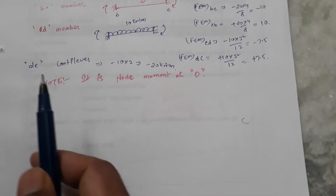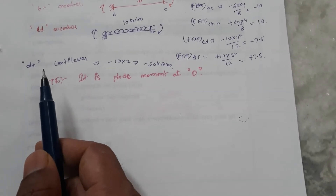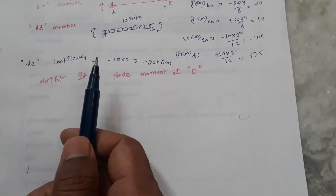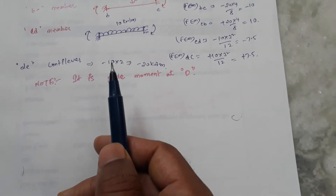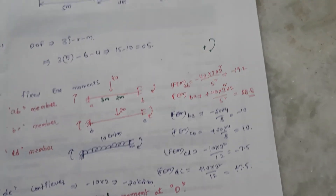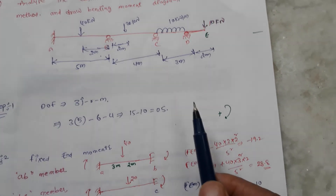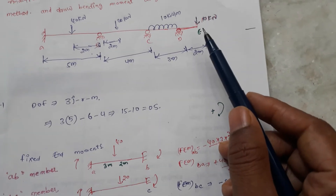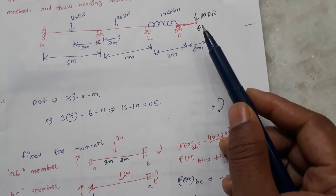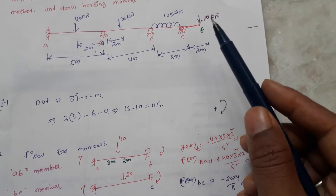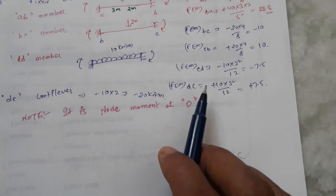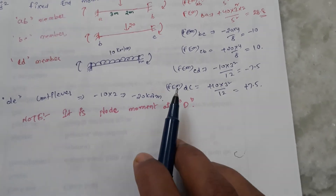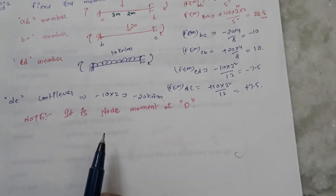Note that DE is a cantilever. Member DE acts like a cantilever at a distance of 2 meters, with a 10 kilonewton force acting at 2 meters. We cut a section and find the end moment, which is minus 20 kilonewton-meters.